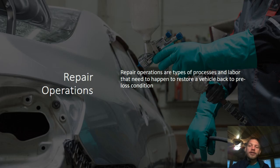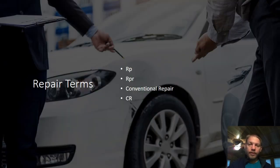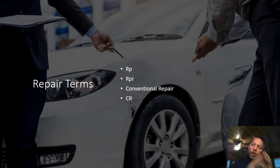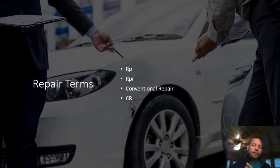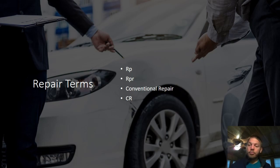As a reminder, repair operations are types of processes and labor that need to happen to restore a vehicle back to pre-loss condition. Here's how the terms and abbreviations work: RPR or RP can mean repair — specifically conventional repair — because there's also something called paintless dent repair. CR stands for conventional repair as well. So if someone says 'we need to conventionally repair that hood,' that means we need to repair the hood.